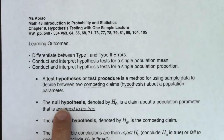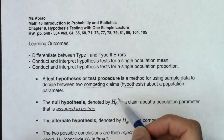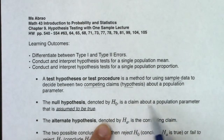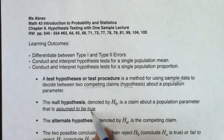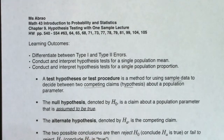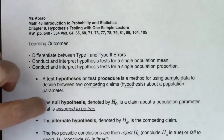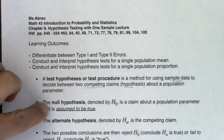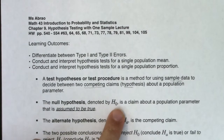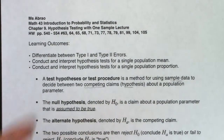The null hypothesis, which we denote by H with a subscript of zero — H sub zero — is a claim about a population parameter that is assumed to be true. You always have to start somewhere, and this is the one we assume to be true. A lot of times you'll see this is the status quo — just what's always been happening. So H sub zero is our claim about our population that we assume to be true.